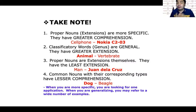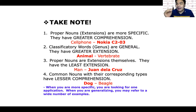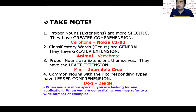Comprehension and extension are always opposite. If extension is greater — more examples — then comprehension is lesser. These are the fingertip rules you need to master. Just go over the examples in the PowerPoint slide. When you are more specific, you are looking for one application. When you are generalizing, you may refer to a wide number of examples. The more general the word or idea, the more examples you can give. The more specific, you are looking for only one application.